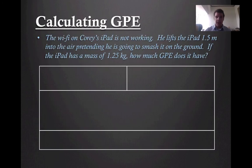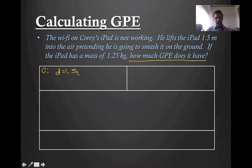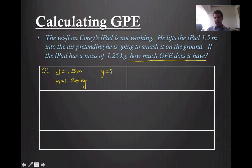So now that we have an equation, let's go ahead and practice. The Wi-Fi on Corey's iPad is not working. He lifts the iPad 1.5 meters into the air, pretending he's going to smash it on the ground. If the iPad has a mass of 1.25 kilograms, how much GPE does it have? So we always want to identify our question. Remember, we always put our givens into the box. Our first given is he lifts it 1.5 meters into the air, so height equals 1.5 meters. The mass is 1.25 kilograms. And the g value — remember, it's not always going to be explicitly given — is 9.8 meters per second squared.